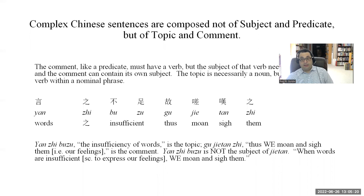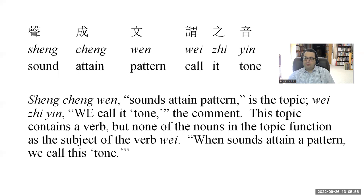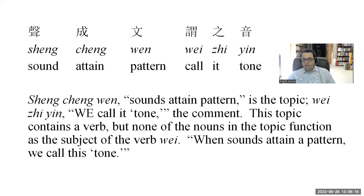English is really not like this at all. Another example: Changcheng wen wajing. 'Changcheng wen' — sounds attain a pattern — that's the topic. 'Wajing' — we call it a tone — that's the comment, with a new subject. This topic contains a verb, but none of the nouns in the topic function as the subject of the word 'wei'; we are the ones who call it a tone. Once again, a 'when' clause in English helps us translate what's going on in much more lapidary fashion in Classical Chinese: 'When sounds attain a pattern, we call this a tone.' You don't need a 'when' in Chinese — you can indicate this using the topic-comment structure.